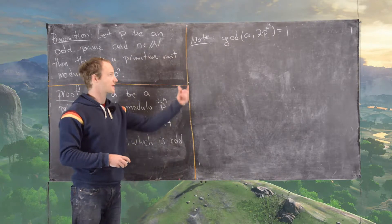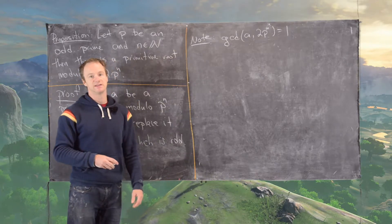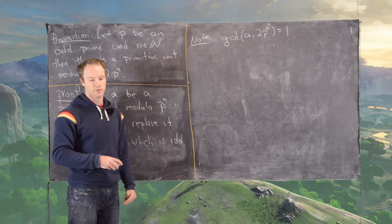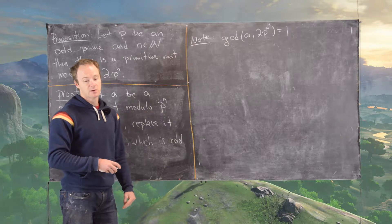So its GCD with the product of these two numbers is 1. We're using the fact here that 2 and p^n are relatively prime.